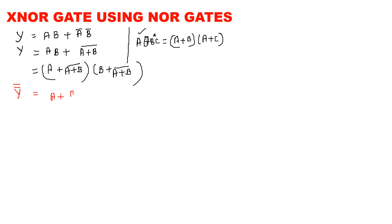So, A plus A plus B the whole bar into B plus A plus B the whole bar. Again, double time the bar.